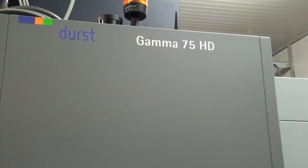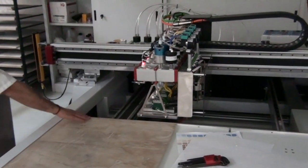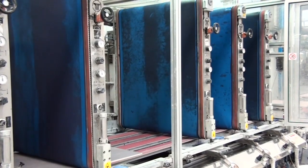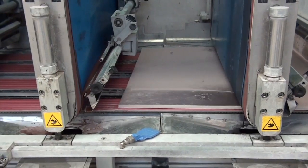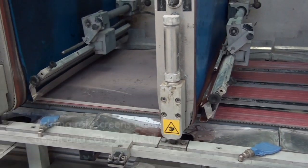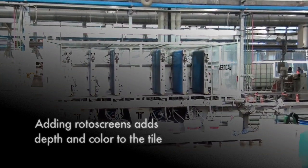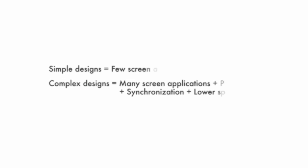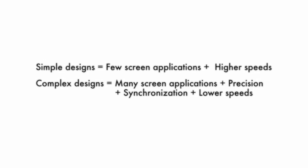Each method has its advantages and special uses depending on the type of end product wanted. The vertical silicon screen method you see now uses long screens acting as a printing press. Adding roto screens adds depth to the pattern. They help create a natural look and reduce pattern monotony. The roto screen's speed may be decreased or accelerated, thus having a significant impact on the printing quality.